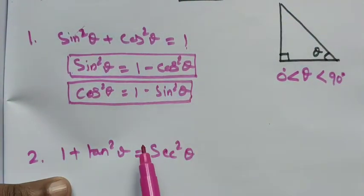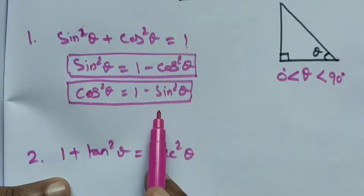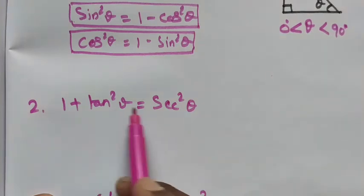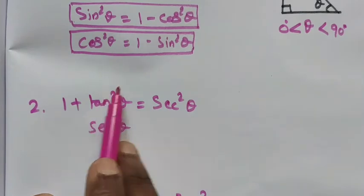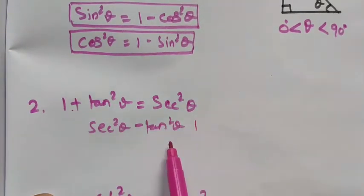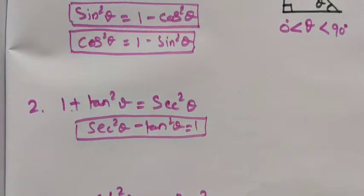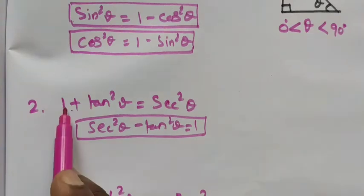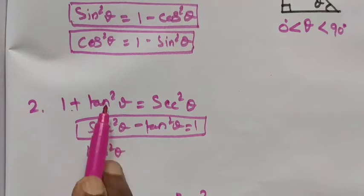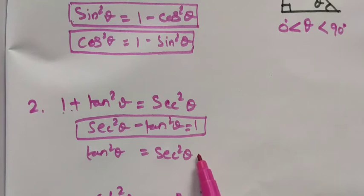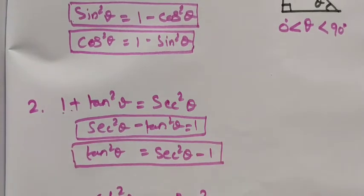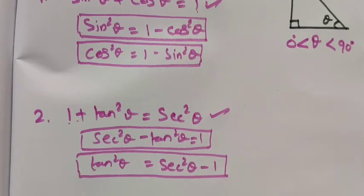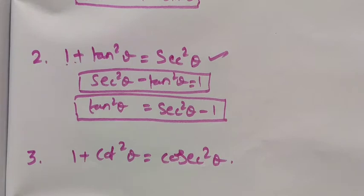Wherever we have cos square theta, we can apply the value 1 minus sin square theta — replacing the terms. Now for the second identity, if I take tan to the other side, secant square theta minus tan square theta is equal to 1. And if I take 1 to the other side, tan square theta is equal to secant square theta minus 1.